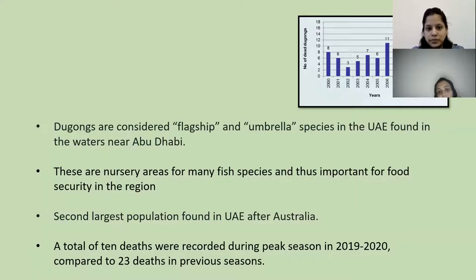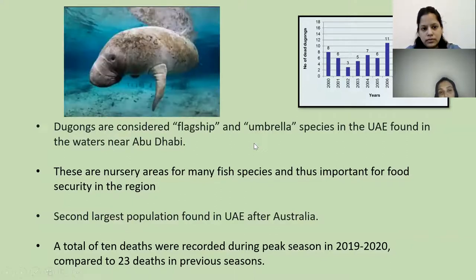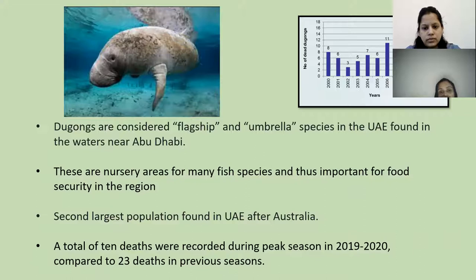The teacher explains that dugongs are important to UAE because they are the flagship and umbrella species. 'Flagship' means they are like stars of the coastal area. 'Umbrella species' means they act like a canopy, protecting other sea creatures as well — that is why they hold this special designation.